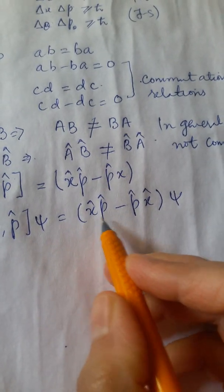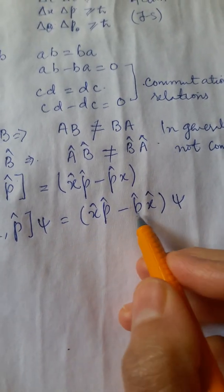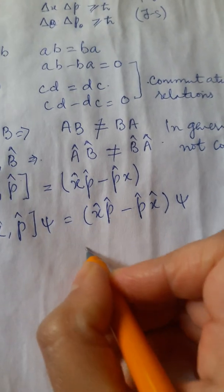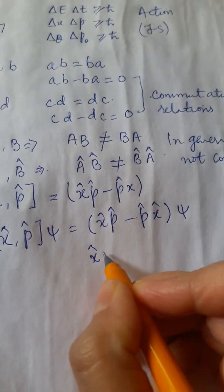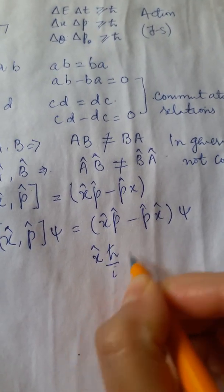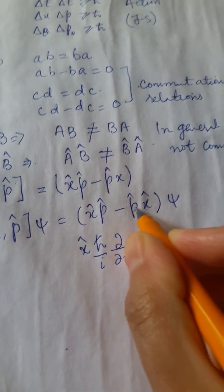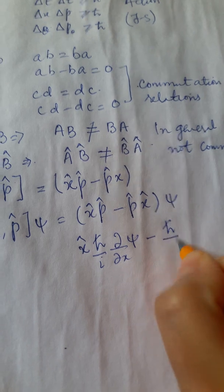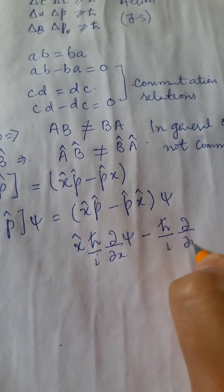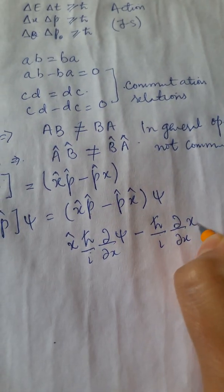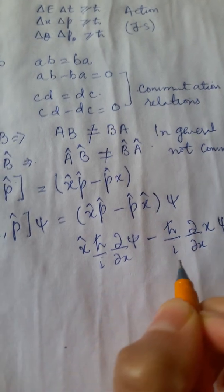Now, let's do that individually. First this with this and then this with this. Now, this is X. For P, I can write its operator as h cross by i d by dx of here you have x and then you have psi.